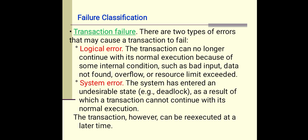The second type of failure cause is system error. The system has entered an undesirable state — for example, deadlock — as a result of which a transaction cannot continue with its normal execution. Whenever a deadlock occurs, the transaction cannot continue its normal execution, and a system error may occur. However, the transaction can be executed at a later time when there are free resources.